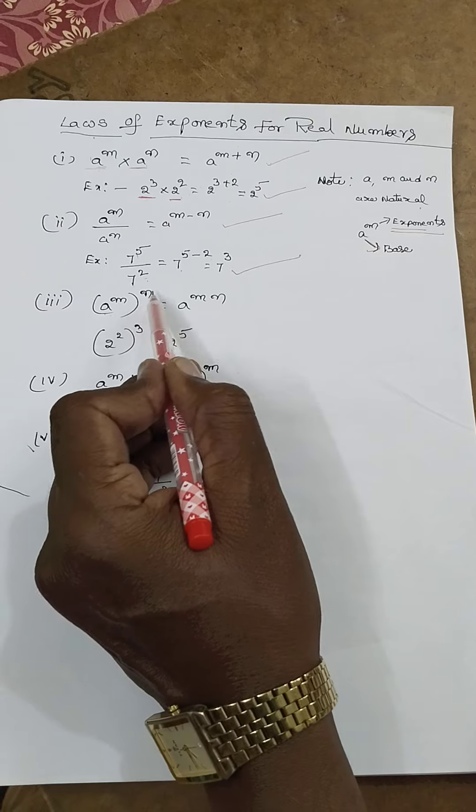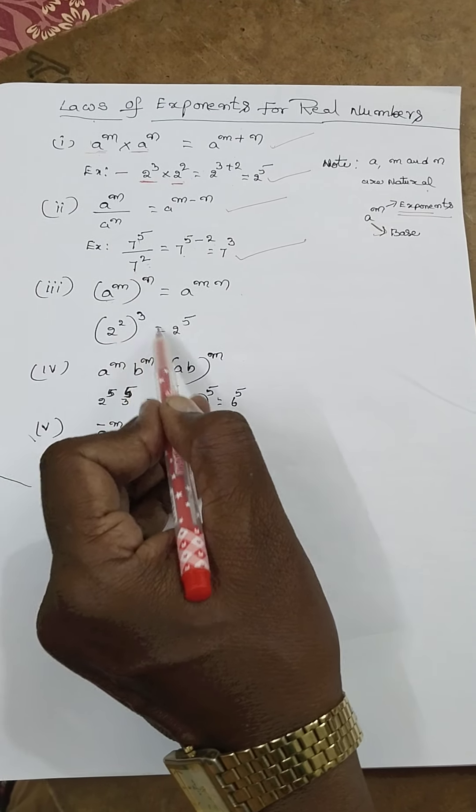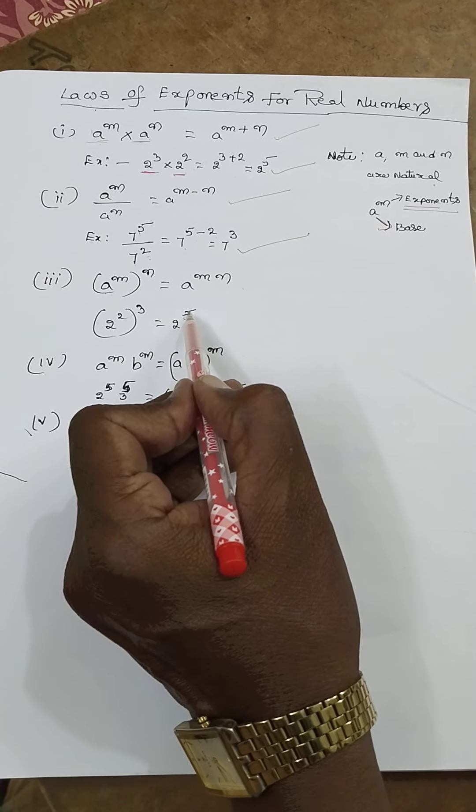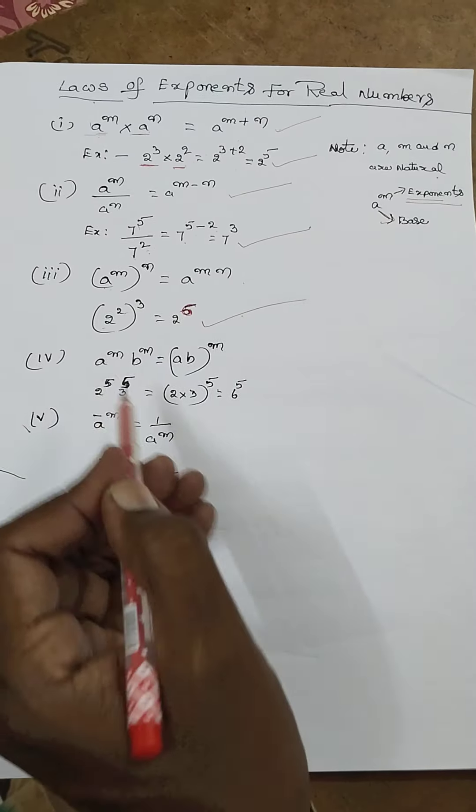Here (a^m)^n = a^(m×n). Take example, (2^2)^3. Product of these 2 numbers, 2 and 3, is 6. So 2^6.